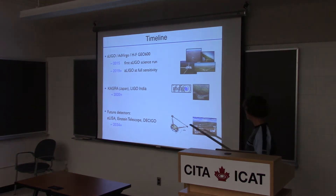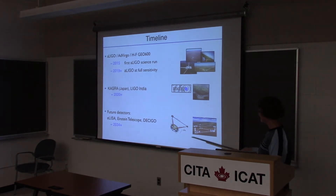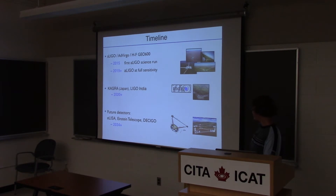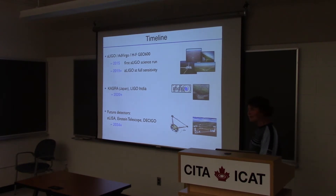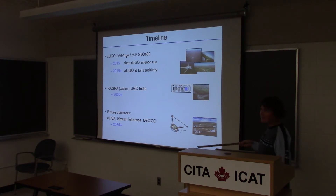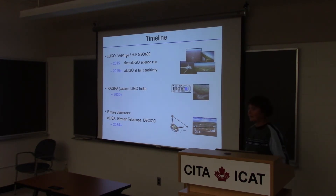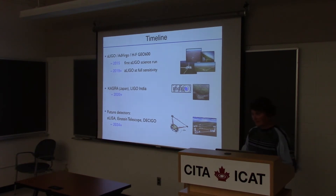There are also some future detectors. There's eLISA, which will be a spacecraft scheduled for 2034, though a Pathfinder mission might already be launched in a few years. And then there's what's called the Einstein telescope, which would be a more sensitive ground-based LIGO-like detector. So there's a lot to come.